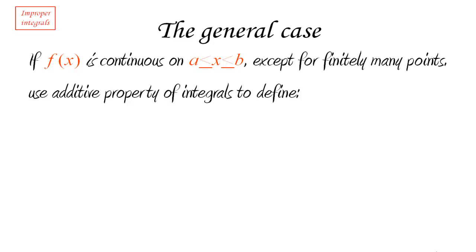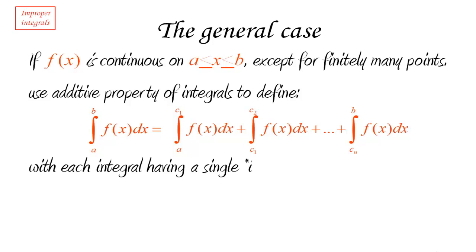So what we're going to do in this situation is we're going to use the additive property of the integrals. The integral from A to B is going to be obtained as the integral from A to C1 plus the integral from C1 to C2 plus the integral from C2 to C3, etc., all the way up to the last point. So we're going to break it up into small pieces, small integrals, but in a very important way.